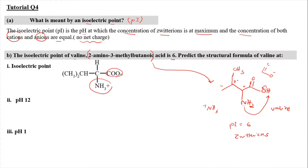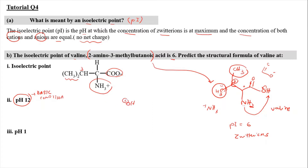Now we draw the structure of valine at pH 12. At pH 12, we have basic conditions, meaning there are hydroxide ions present. The hydroxide ion takes up a hydrogen from NH3+, so one hydrogen is lost and it becomes NH2. The rest of the structure is unaffected. As a result, the overall charge is negative, making it an anion.